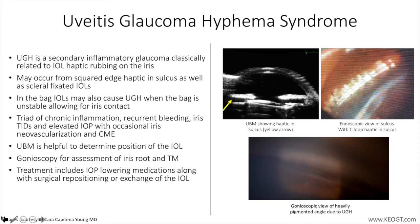The definitive treatment involves surgical repositioning or exchange of the intraocular lens. Combining glaucoma surgery with IOL repositioning or exchange is often a complex issue to address, and must consider the specific patient as well as the overall staging of glaucoma, along with clinical examination of the angle to ascertain likelihood of the drainage system recovering over time.